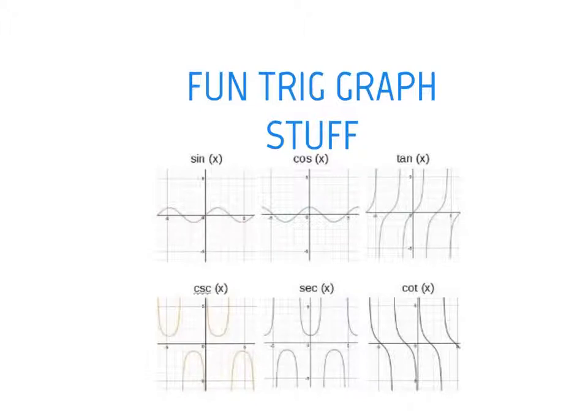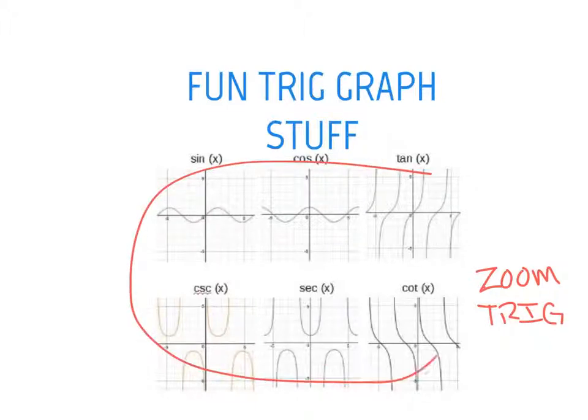And then we saw in class here recently that our calculator doesn't necessarily have a button for cosecant or secant or cotangent, but we can kind of manipulate it. If you want to graph cotangent, just type in 1 divided by tangent. Or secant could be 1 divided by cosine. And the last comment I'll throw here is when you do graph these on your calculator, your best friend is going to be zoom trig, and that's going to set the window up so that you get the exact same graph as what we're seeing here.